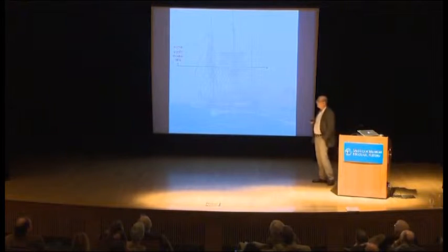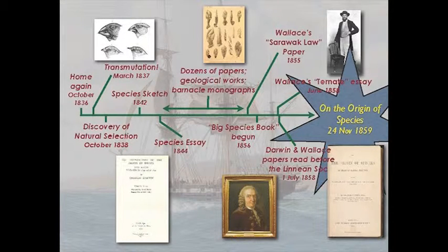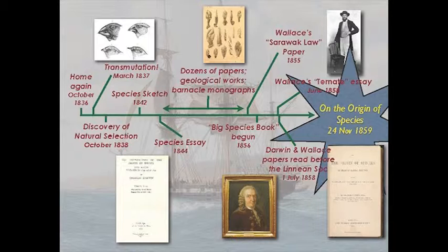Here's a thumbnail sketch of Darwin's activity. He returns home from his voyage in October 1836, and it's not until the following March that — through information on fossils from Richard Owen the paleontologist, and from John Gould the ornithologist about the significance of his Galapagos birds and their relationship with birds of mainland South America — he becomes convinced in March 1837 that species must change. He begins to puzzle immediately over a mechanism, and in October 1838, hits upon natural selection.